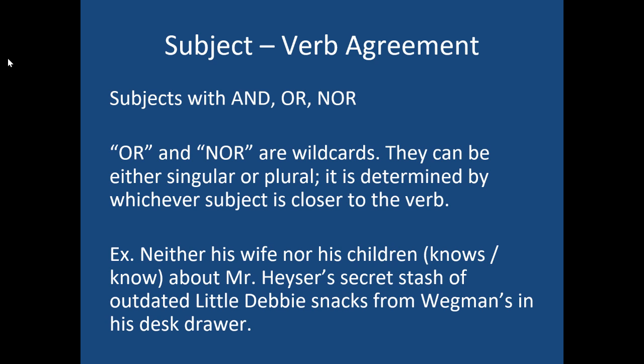For example: 'Neither his wife nor his children knows or know about Mr. Heiser's secret stash of outdated Little Debbie snacks in his desk drawer.' In this case, I would say 'know' — a plural verb — not because the subject is plural, but because I'm using 'nor' to join the two subjects, wife and children, and the subject closer to the verb is 'children'. So 'children' defines the verb. If I switch the order to 'neither his children nor his wife', I'd say 'knows' — a singular verb — because 'wife' is now closest and wife is singular. Whatever subject is closer controls the verb.